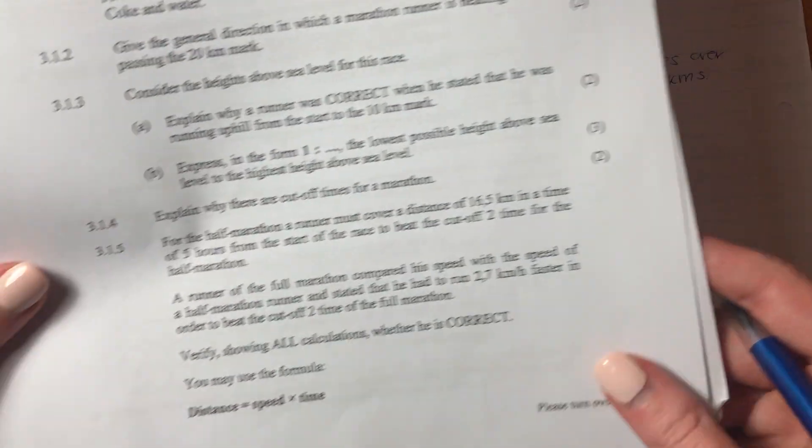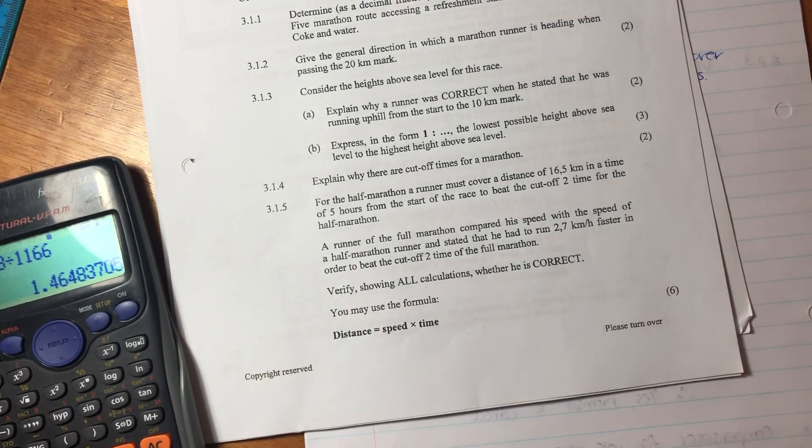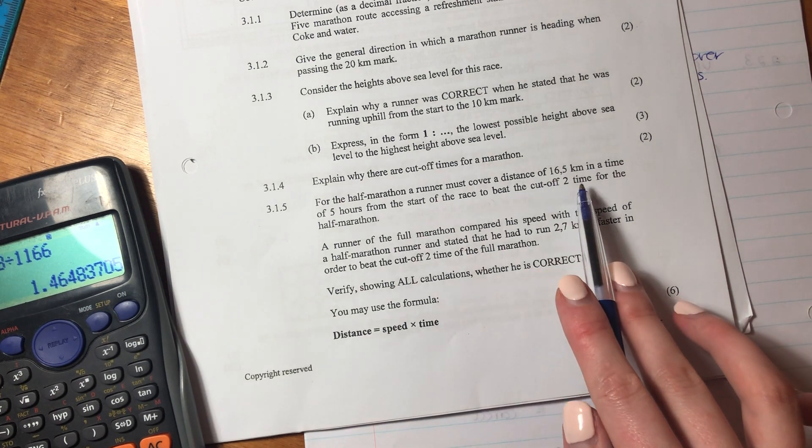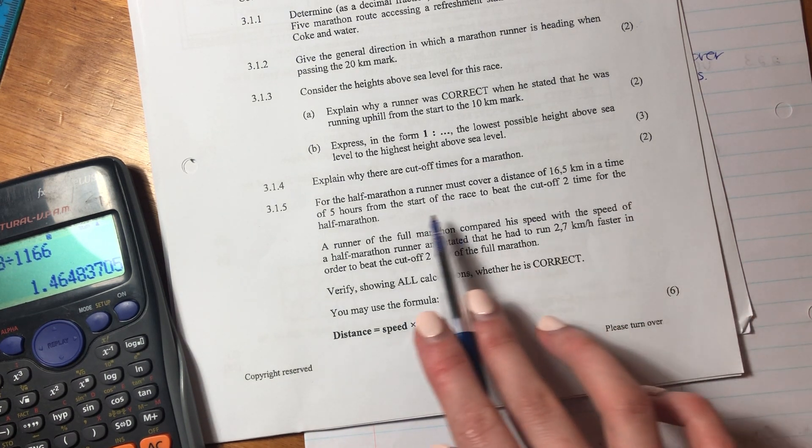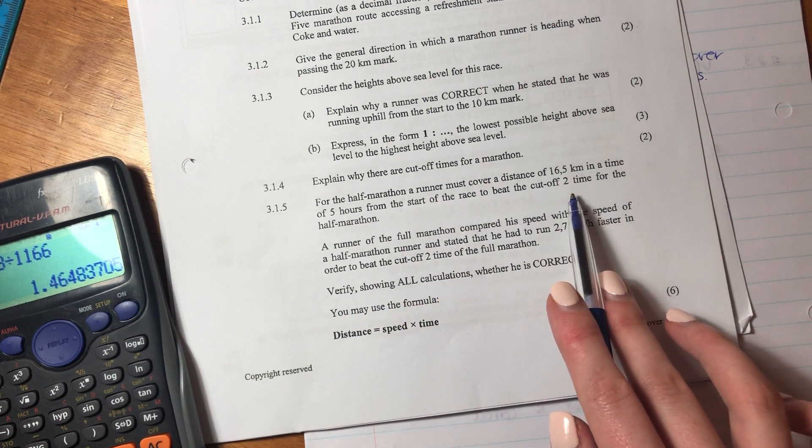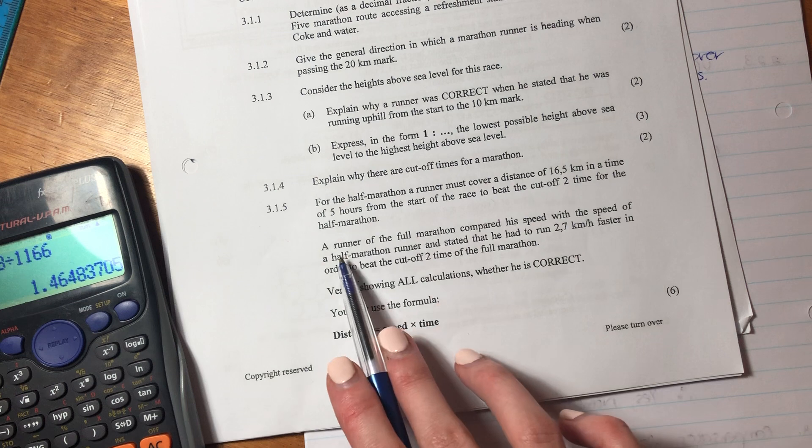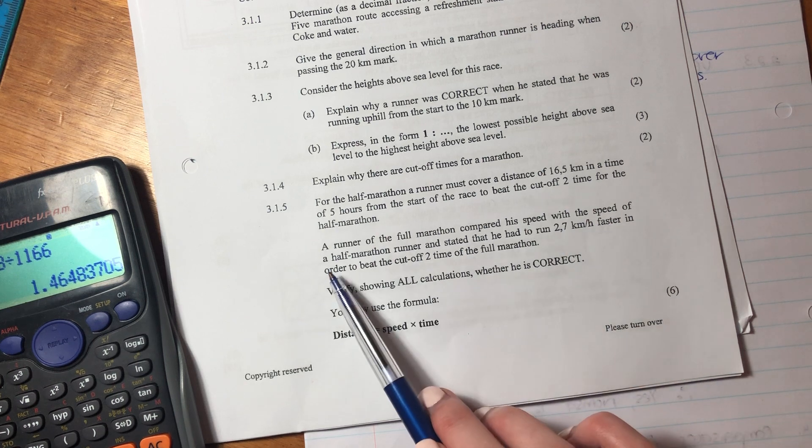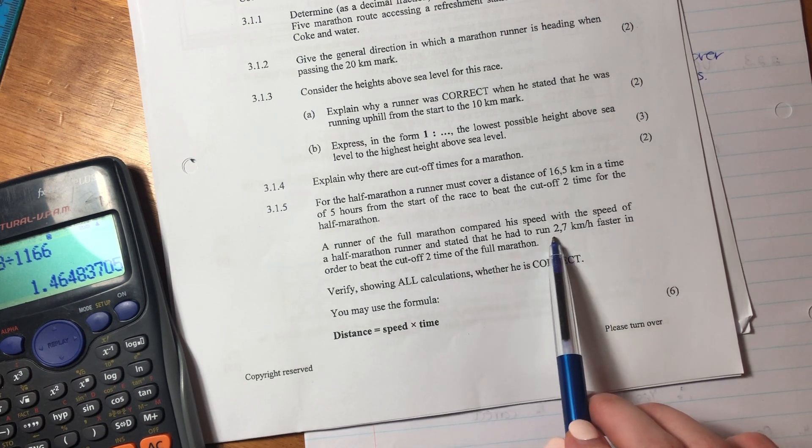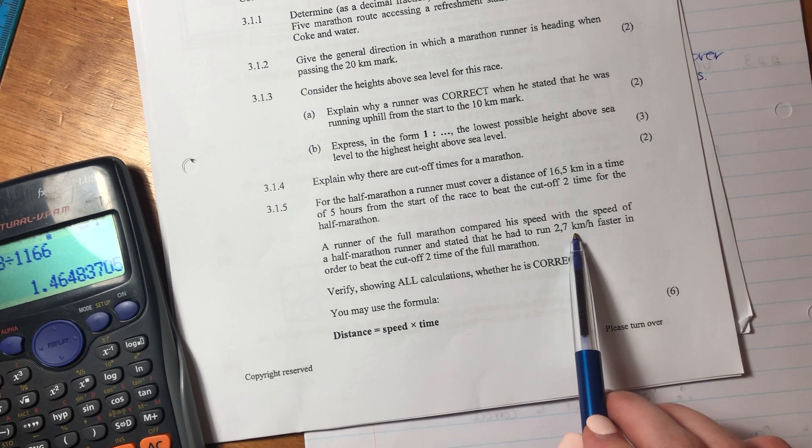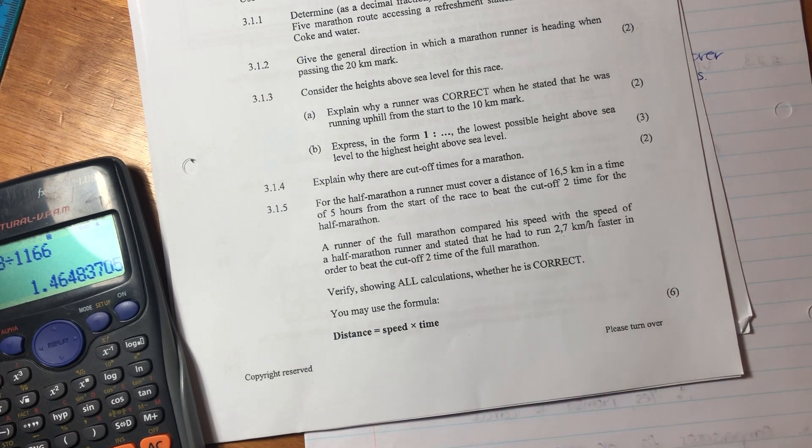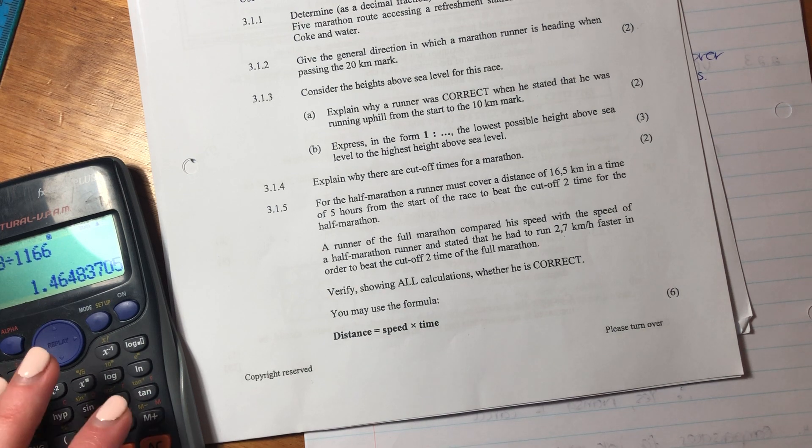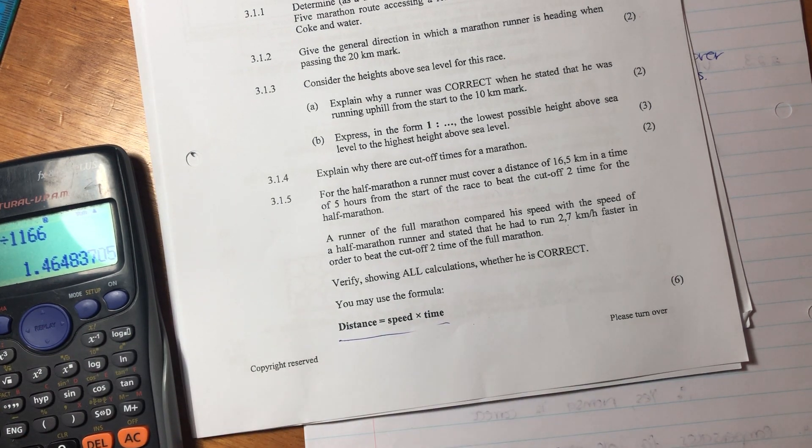Let's now move to 3.1.5. So it says for the half marathon, a runner must cover a distance of 16.5 kilometers in a time of five hours from the start of the race to beat the cutoff two time for the half marathon. A runner of the full marathon compared his speed with the speed of the half marathon runner and stated that he had to run 2.757 kilometers per hour faster in order to beat the cutoff time of the full marathon. Verify showing all calculations, whether this is correct. And they've given us this nice little formula.